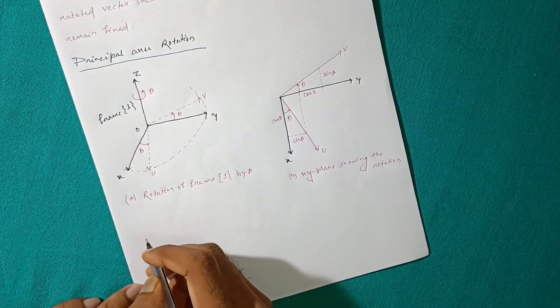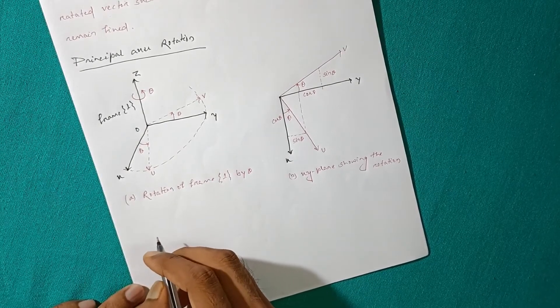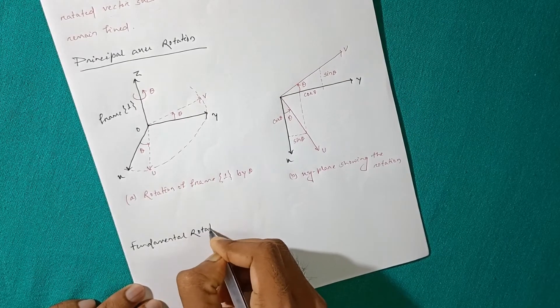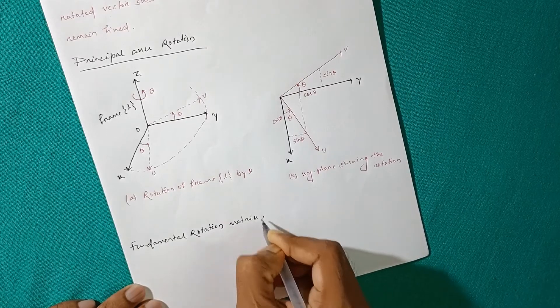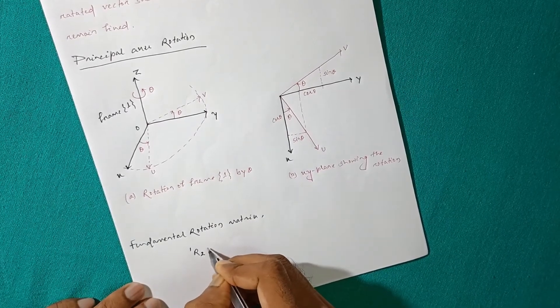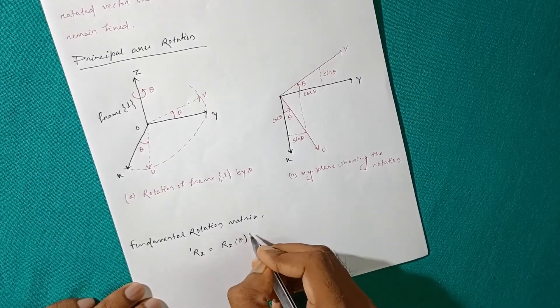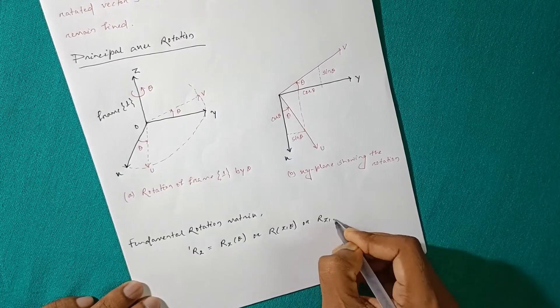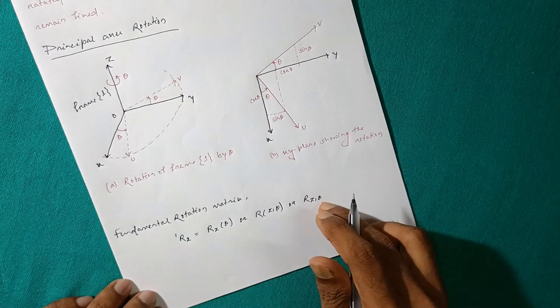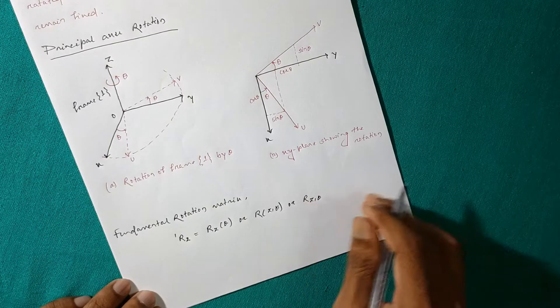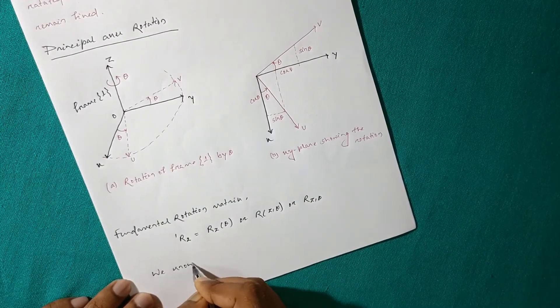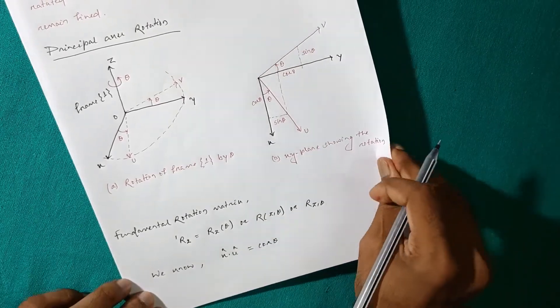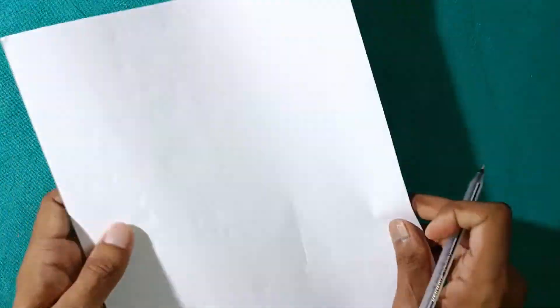So you have to remember the formulae as we all know fundamental rotation matrix that is R_z(theta), or it can be written as R_z(theta). Here we are considering only for Z axis and with an angle of theta. X cap dot u cap equal to cos theta.